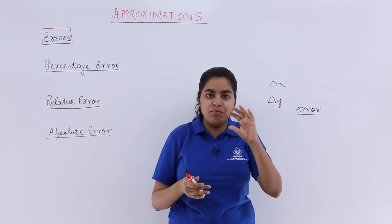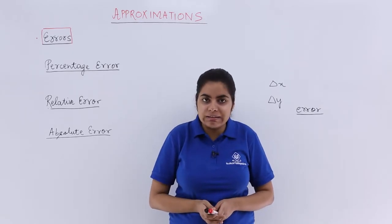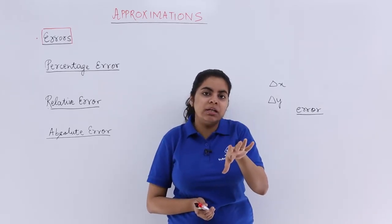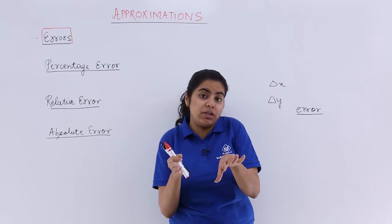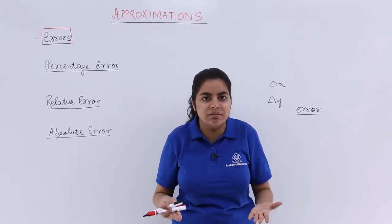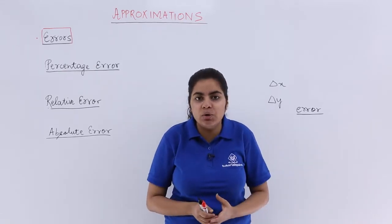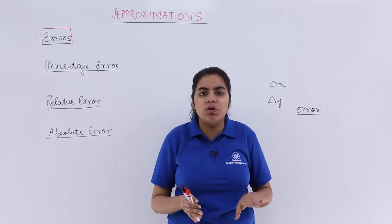Error may be both in plus or minus, that means you can either get, out of 15 centimeter which you should get, suppose you are getting 15.1, or if 15 centimeter you should get you are getting 14.9, even that is error. So error means any change or any deviation from the actual value, the value is not equal to the original value.